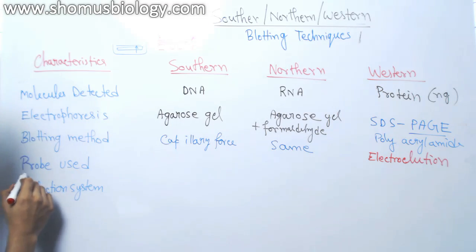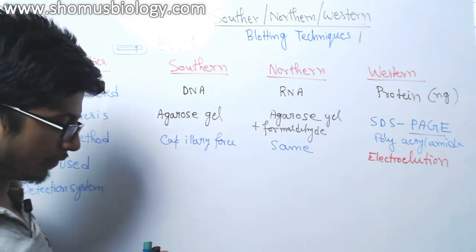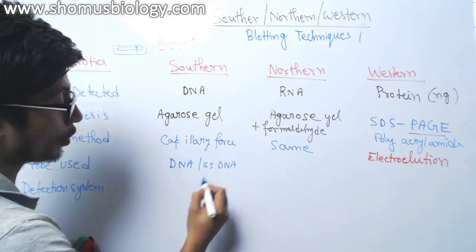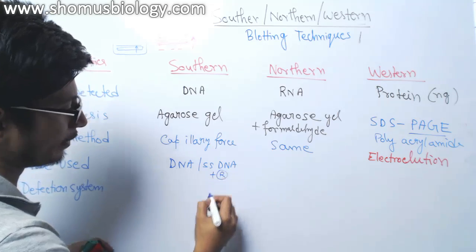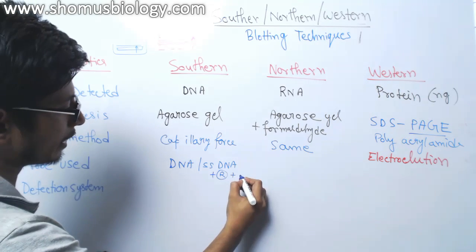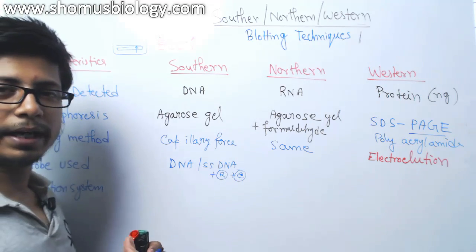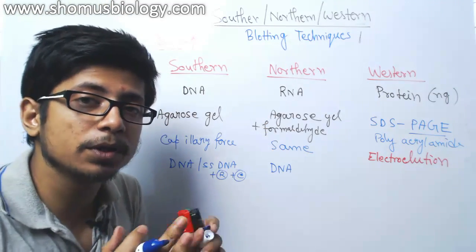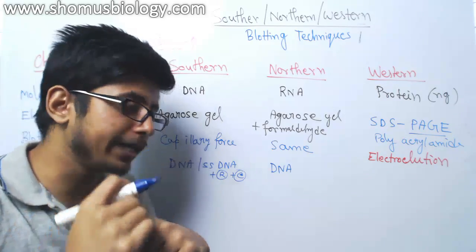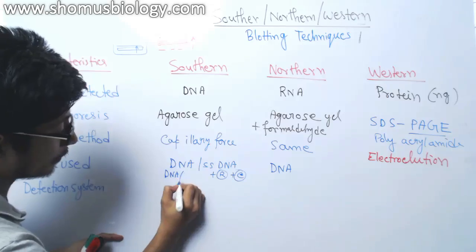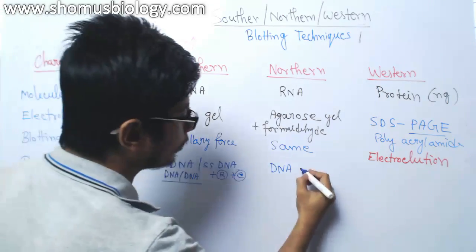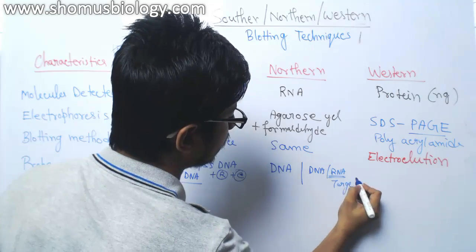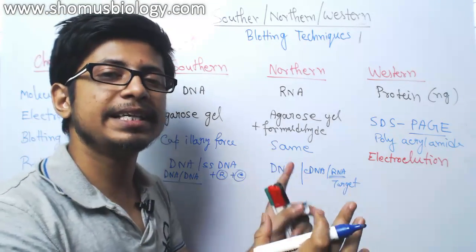The fourth characteristic is the probe used. In southern blotting, single-stranded DNA probes are used, which are attached with radioactive labeling or chemiluminescence molecules. In northern blotting, we also use a DNA probe — specifically cDNA — so the hybridization in southern blotting is DNA-DNA, while in northern blotting it is a DNA-RNA hybrid, because RNA is the target.